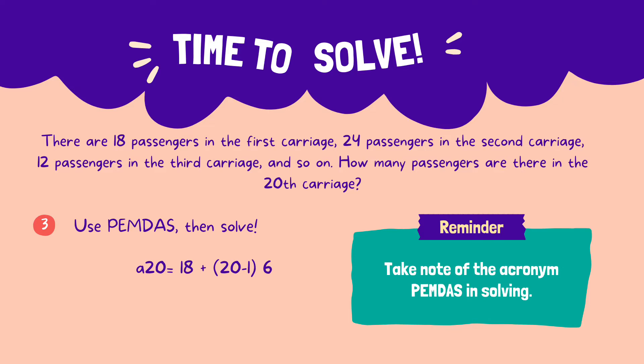Now that we are done substituting, let us solve. Let's take note of the acronym PEMDAS. First, P for parenthesis — let us solve the numbers inside the parenthesis: 20 minus 1 equals 19. Second, M for multiplication — since we do not have an exponent, let us skip it and multiply 19 by our common difference 6, which gives us 114. Third, A for addition — since we will not use division for this problem, let us add 18 and 114, and we'll get 132.